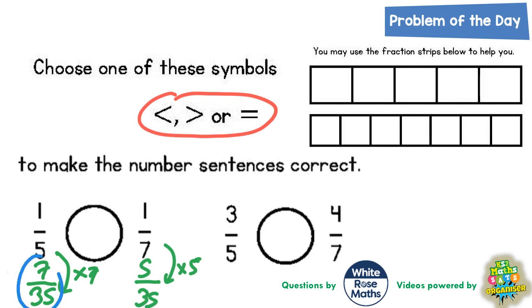So now we really need to compare the 7/35 to the 5/35. Much easier to compare when the denominators are both the same. 7/35 is obviously bigger than 5/35.